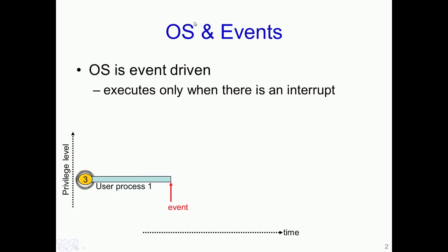Let us look at the slides to see what this means. Suppose you have a user process that is running. As we have seen before, a user process runs in user space and in the Intel nomenclature this is in ring 3. This user process continues to execute on the processor until an event occurs. When this event occurs, it would trigger the operating system to execute.